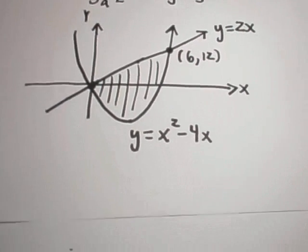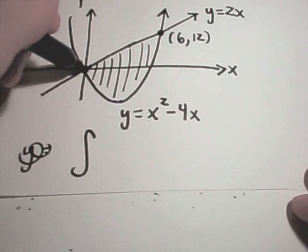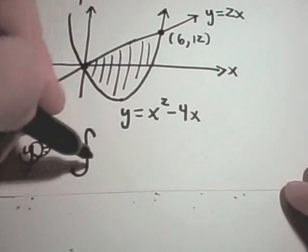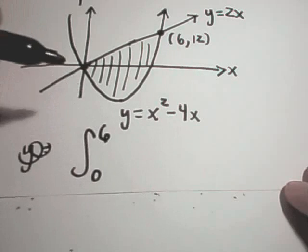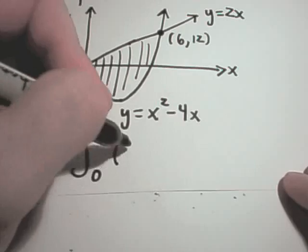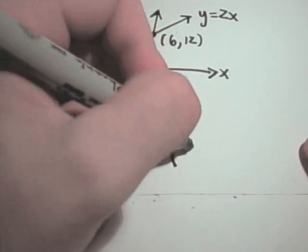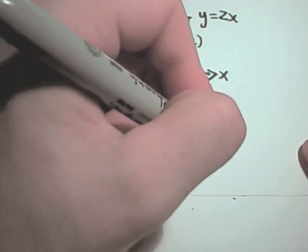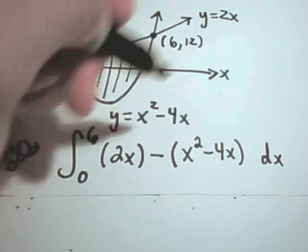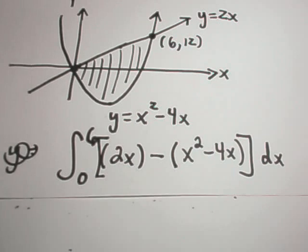Well, to set up this problem, again, the basic idea is you take the smallest x coordinate to the largest x coordinate. Those are your limits of integration, so from 0 to 6. You take the curve on top, which in this case is 2x. And you subtract away the curve on the bottom, which is x squared minus 4x. And this is now the integral that you have to calculate.